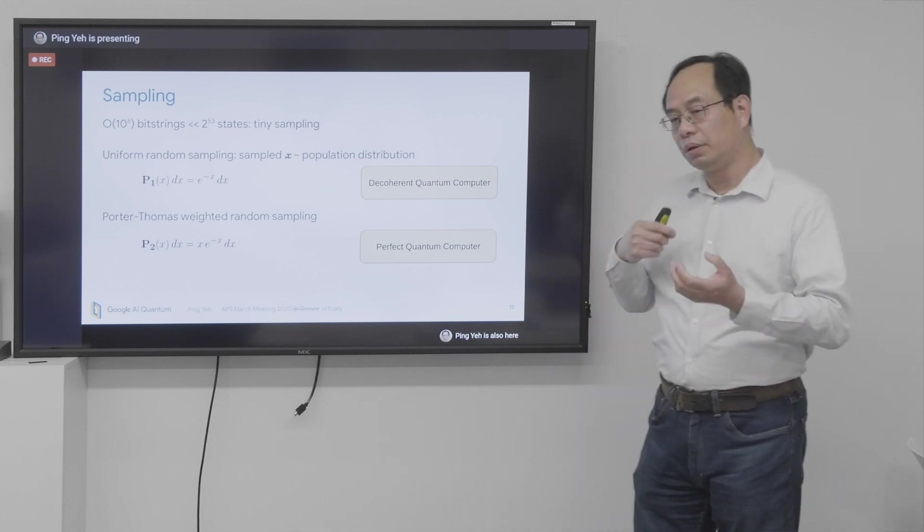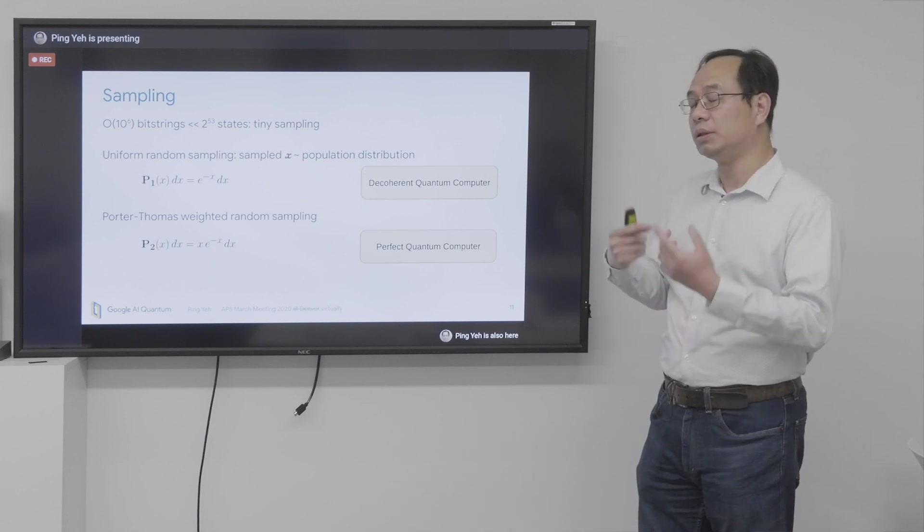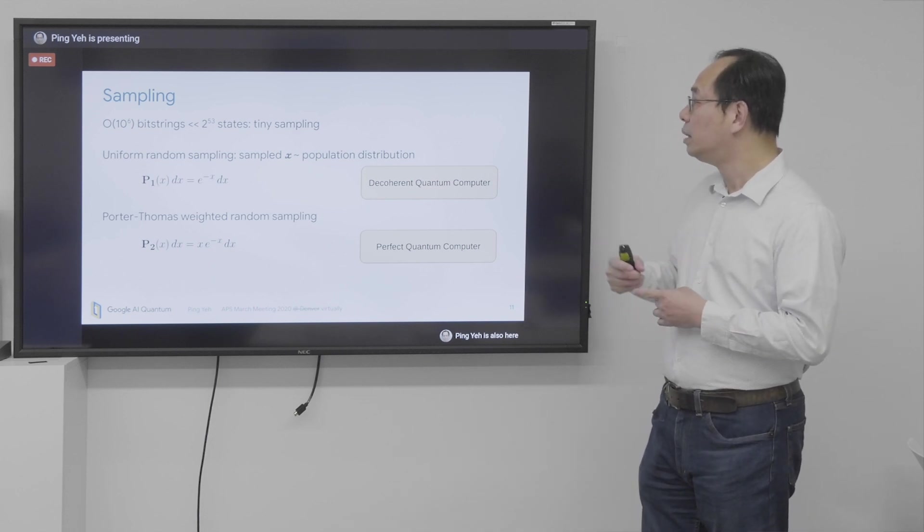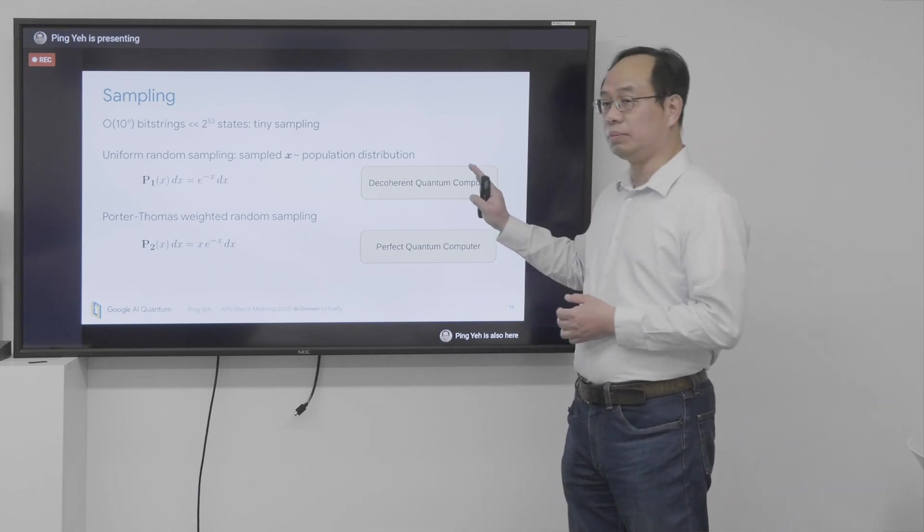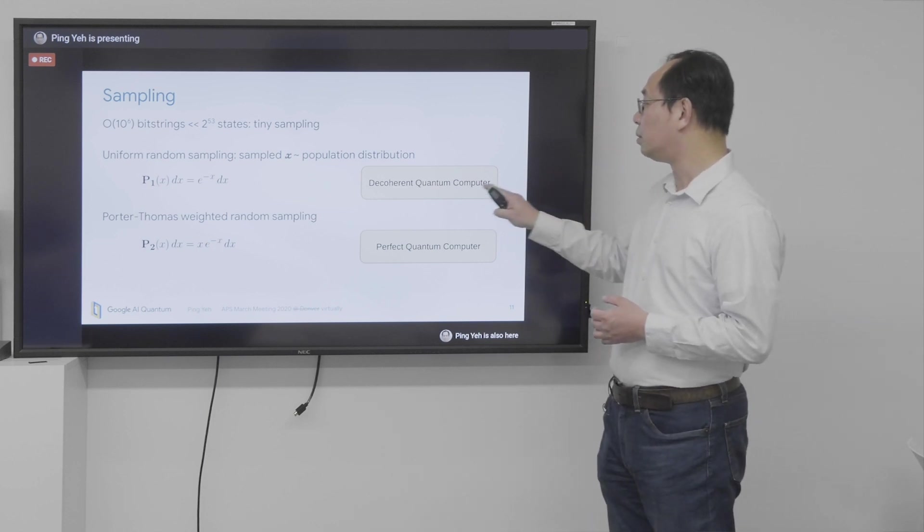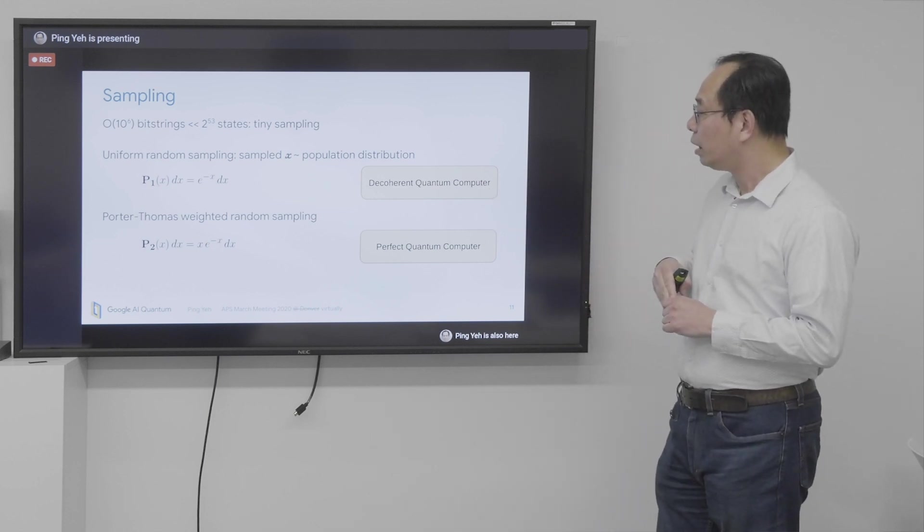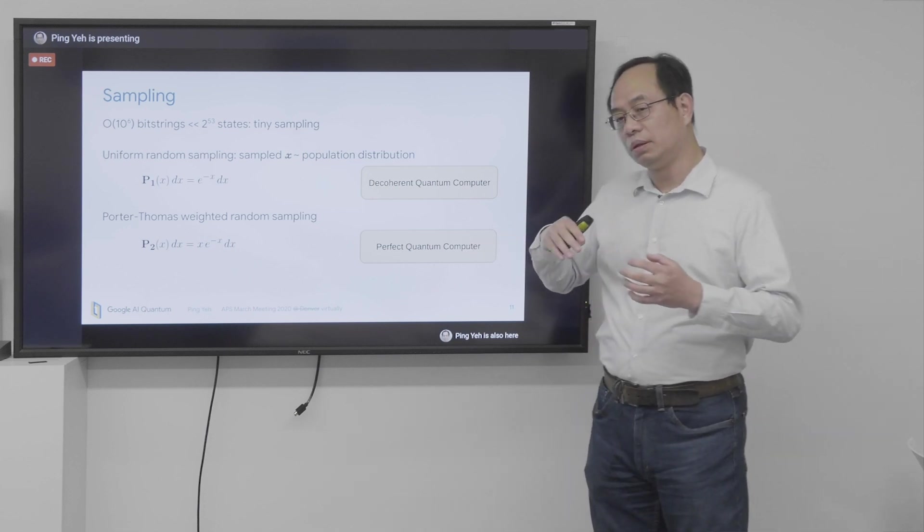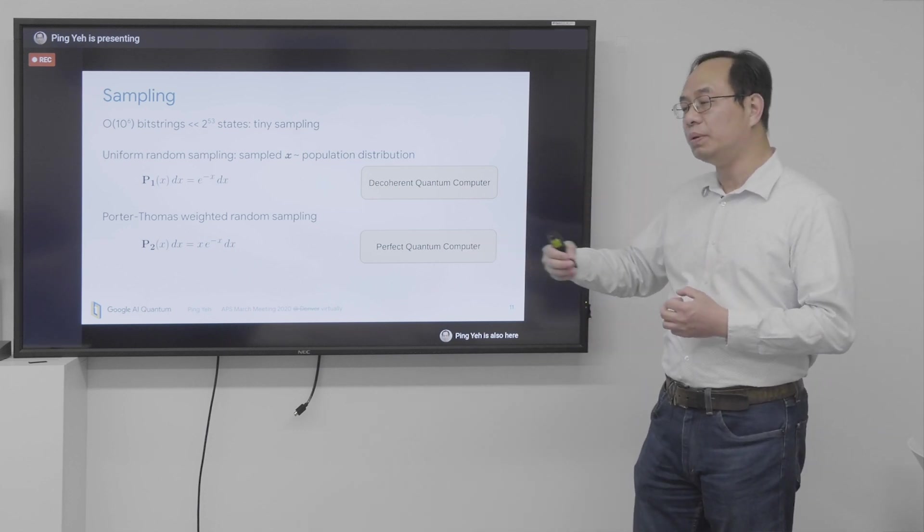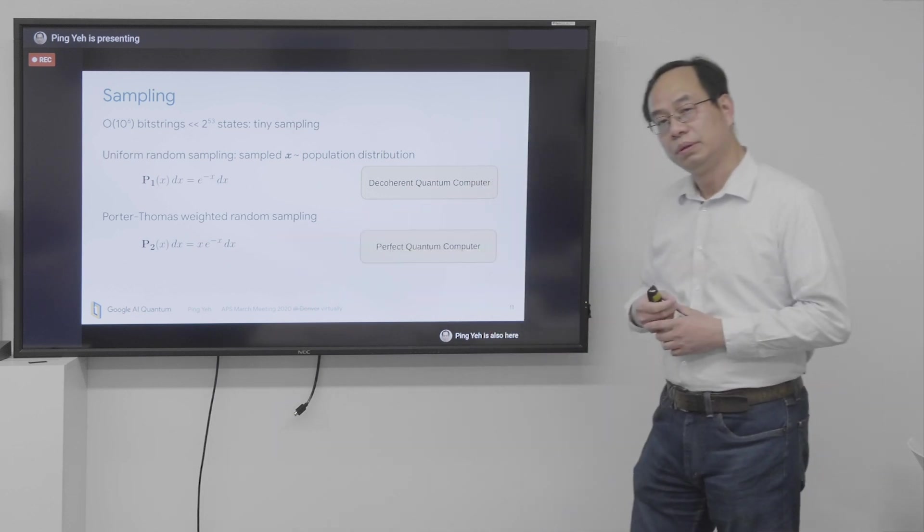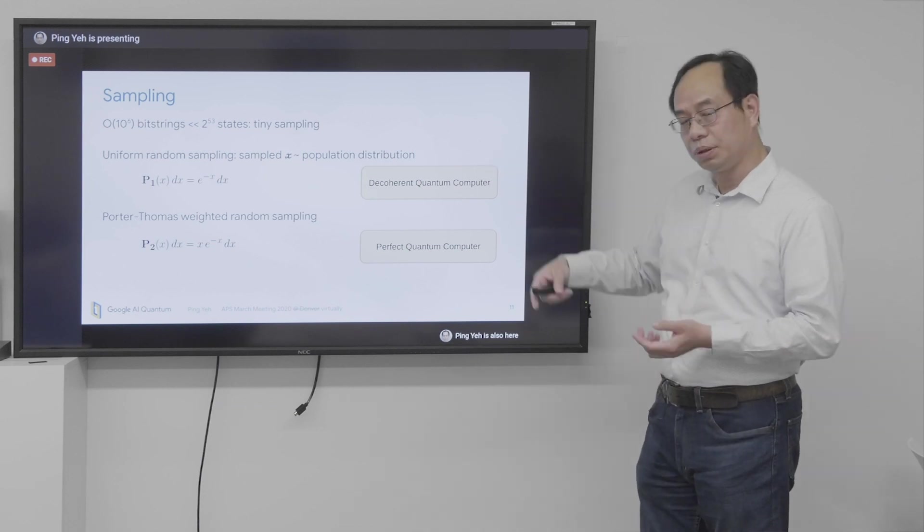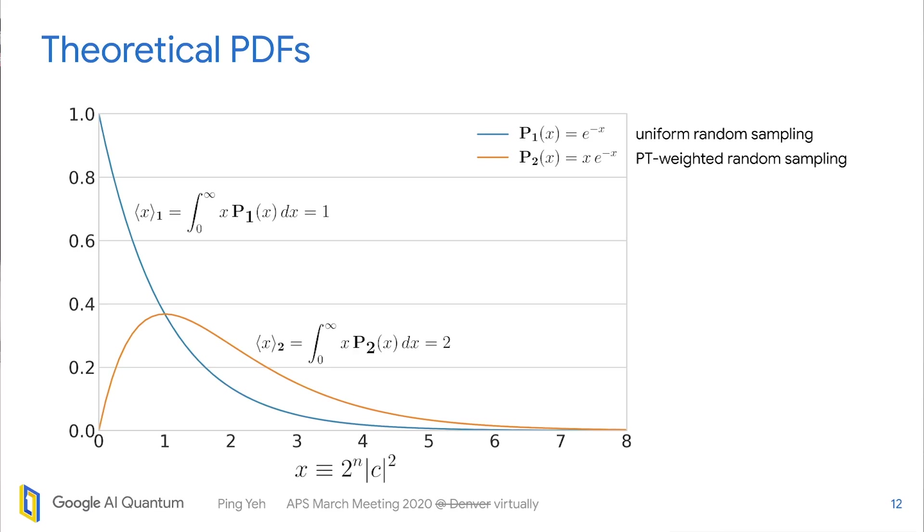And then the bit string you sampled and the x value, I mean the scaled probability value you get, will be distributed according to the population distribution, which is Porter-Thomas itself. And this is what a decoherent quantum computer will give you. And if it is a perfect quantum computer, then the bit strings with higher probability will be sampled more often. So the distribution becomes x times exponential. So I call these two distributions, p1 and p2. And it so happens that it looks like this. And the average value of p1 is 1, p2 is 2.